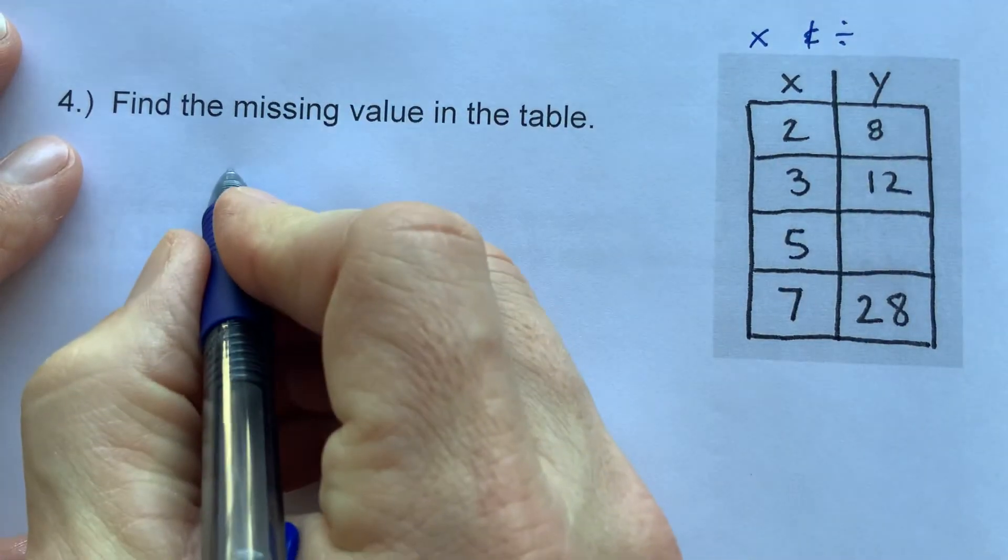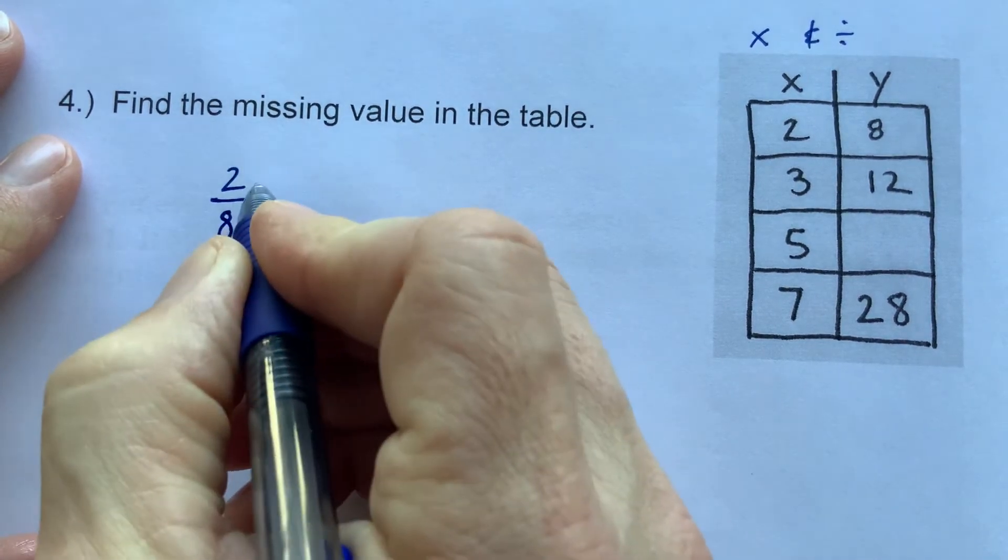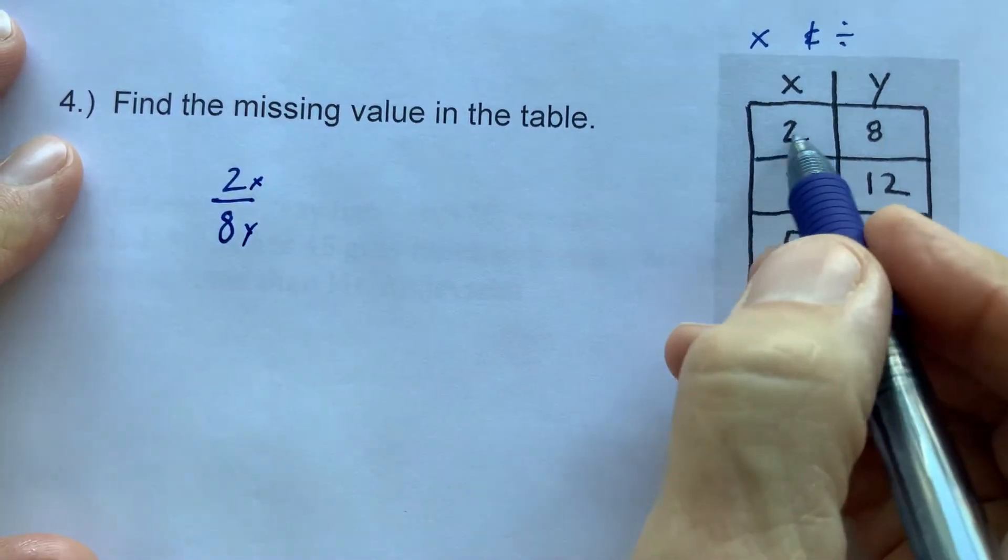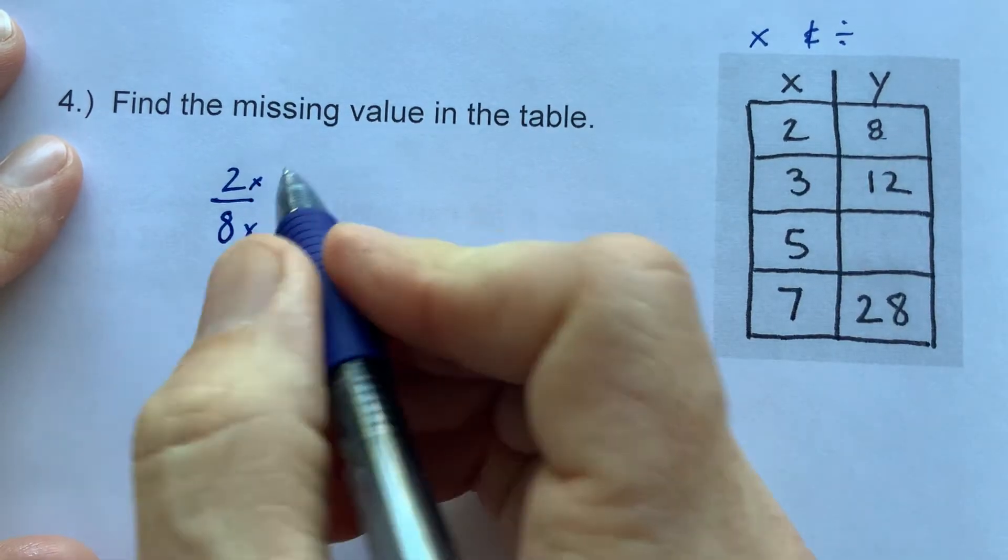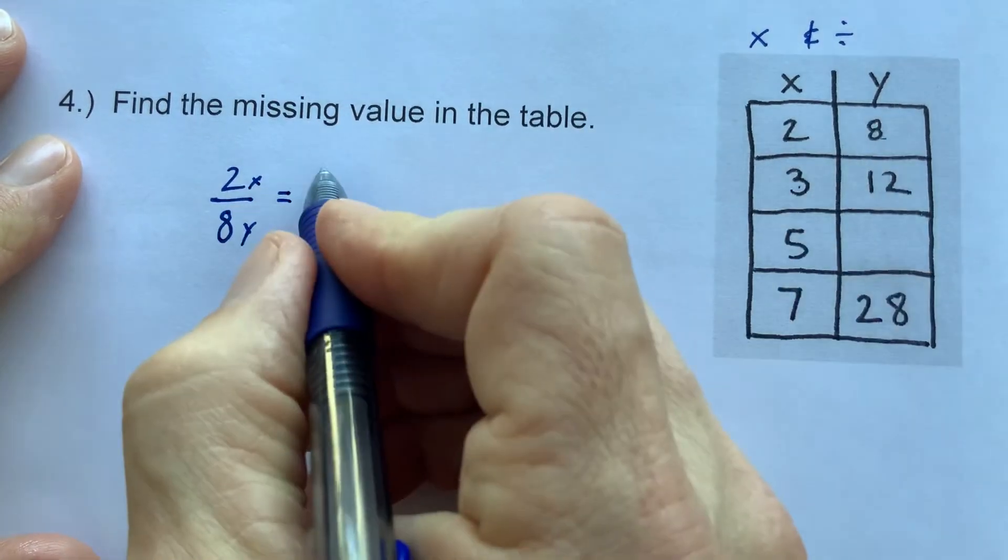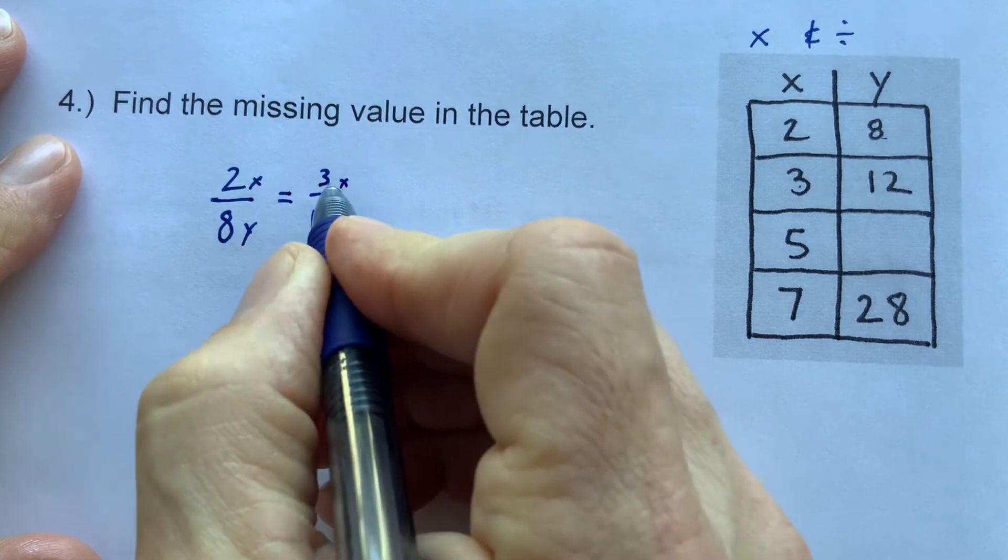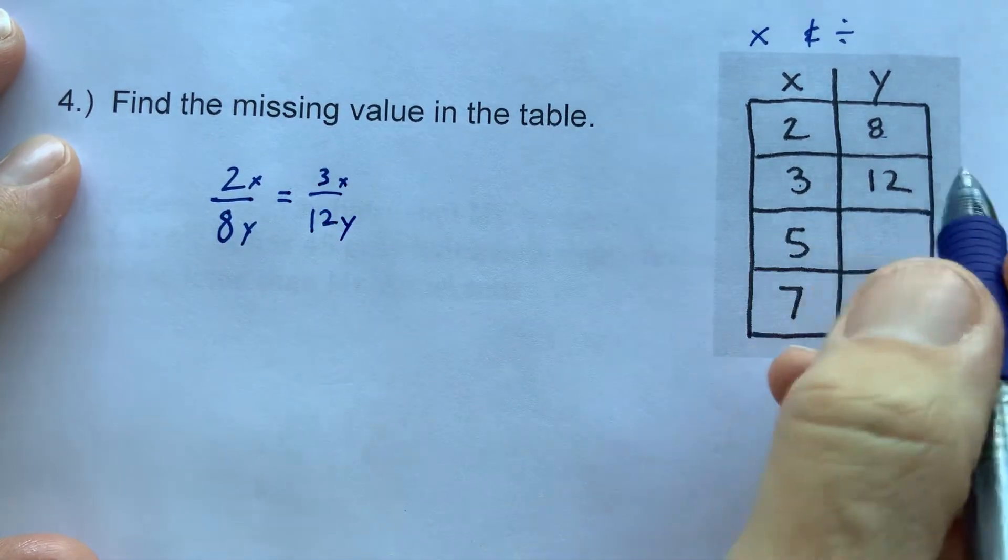So what this is showing me is that I'm going to have to use the ratio x over y, 2 to 8. And it's saying 2 to 8 is equal to 3 to 12. 3 is x, y is 12.